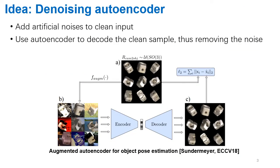The main idea of our method is the augmented autoencoder. This technique was proven to be successful for object pose estimation in Sander-Meyer's work. In essence, this technique is a denoising autoencoder. To train an object pose estimation system that is robust to different background lighting conditions, artificial noises are added to the clean input. The autoencoder has to reconstruct the clean input where the artificial noises are removed, resulting in a system that is invariant to the noises. In our paper, we apply this idea to hand pose estimation with the hand as the main reconstruction target and the object as the noise.